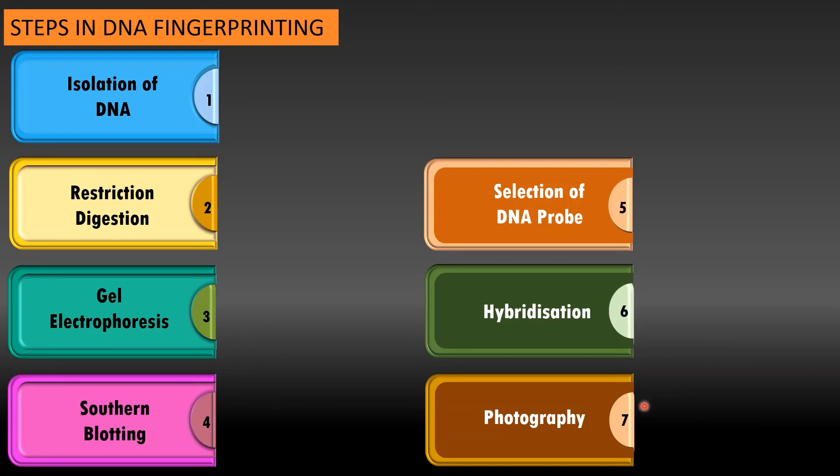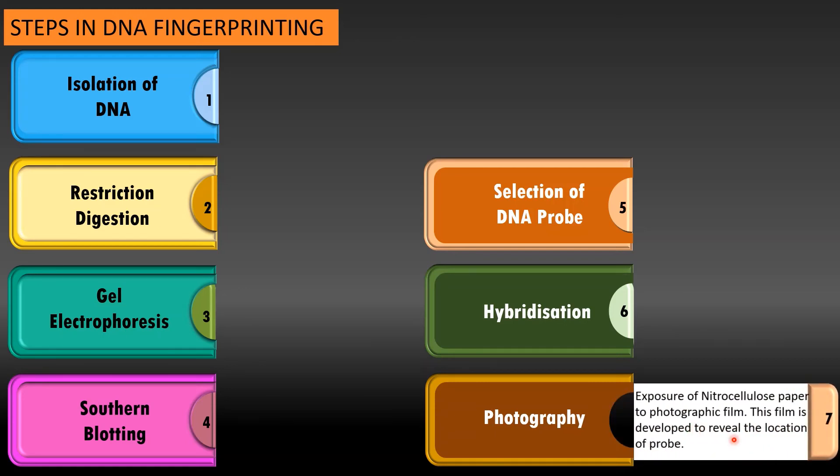And at the end the nylon membrane paper or nitrocellulose paper is subjected to photographic film so that we can identify the location of the probe. So, exposure of nitrocellulose paper to the photographic film. And this film is developed to reveal the location of the probe.